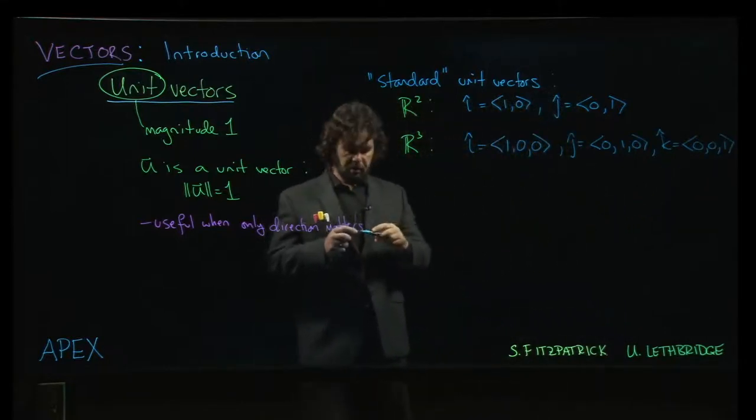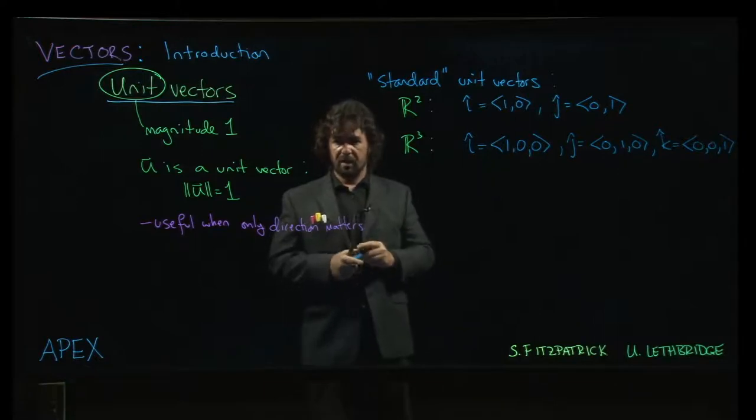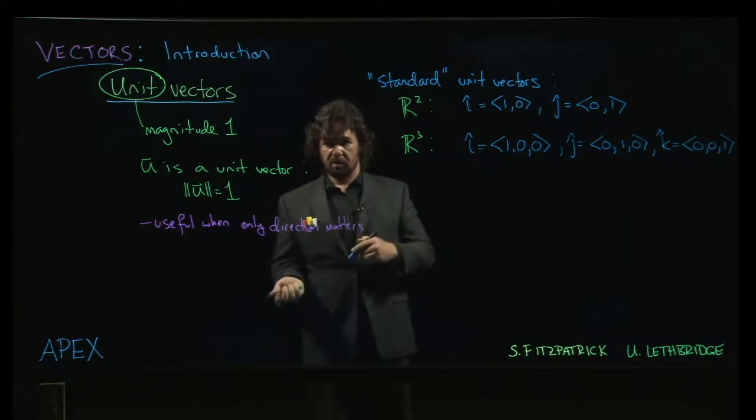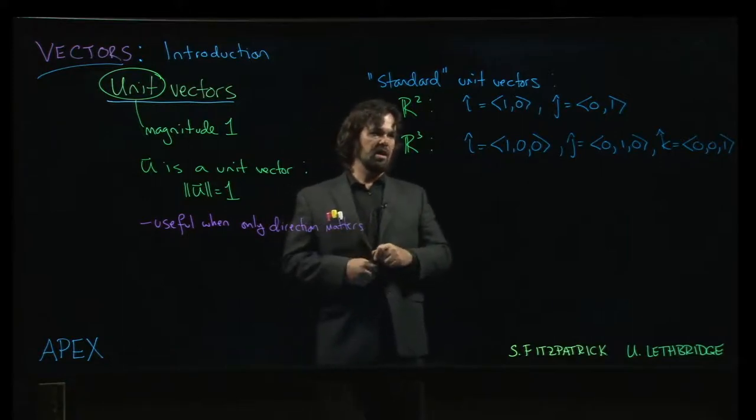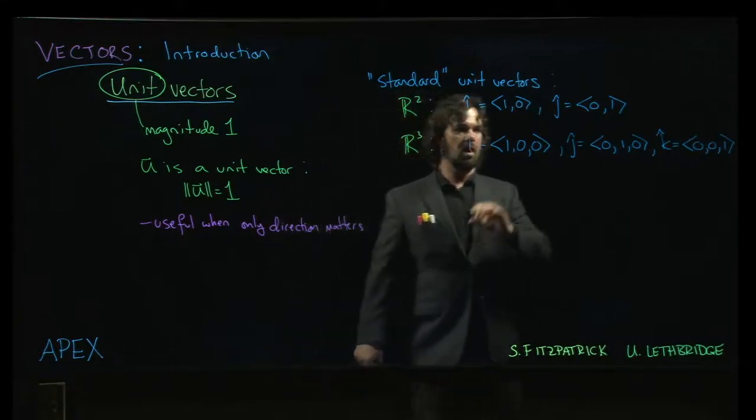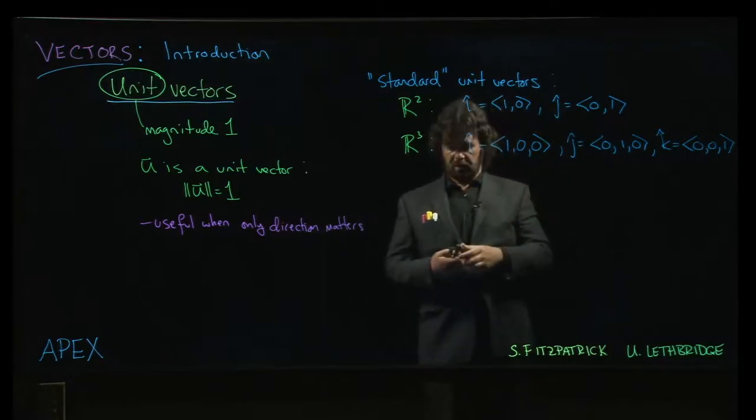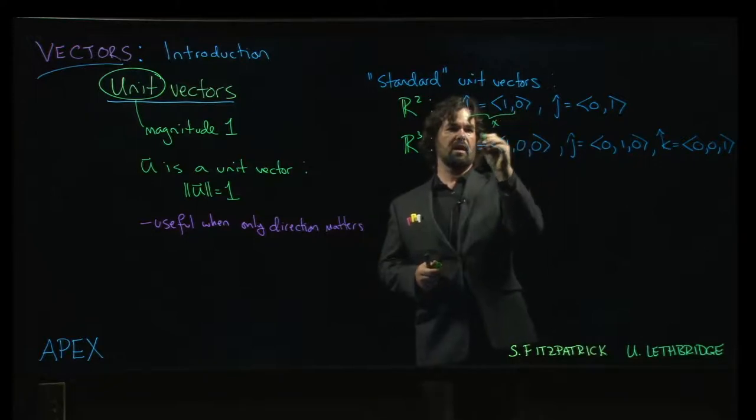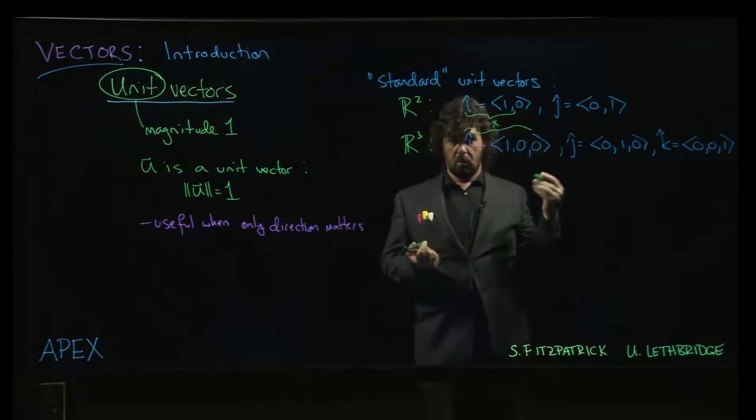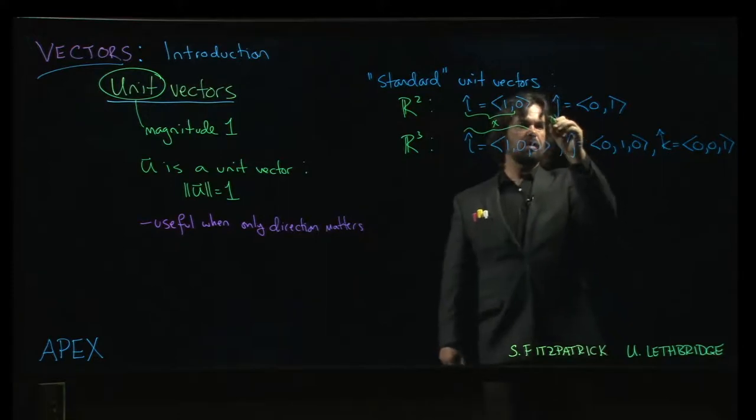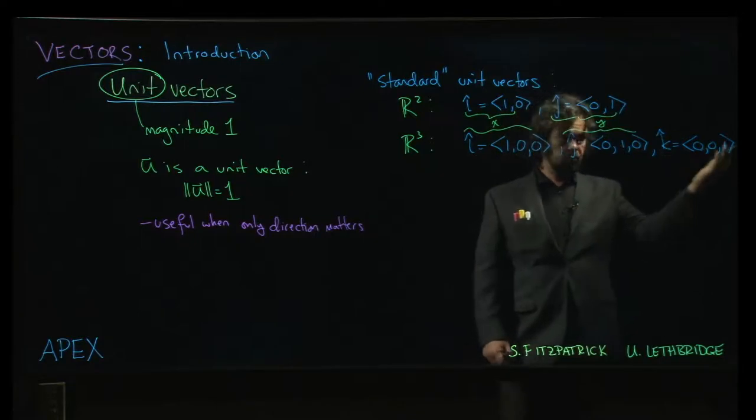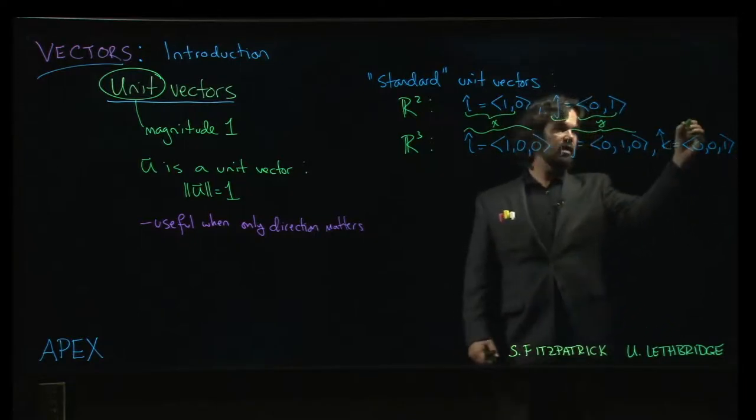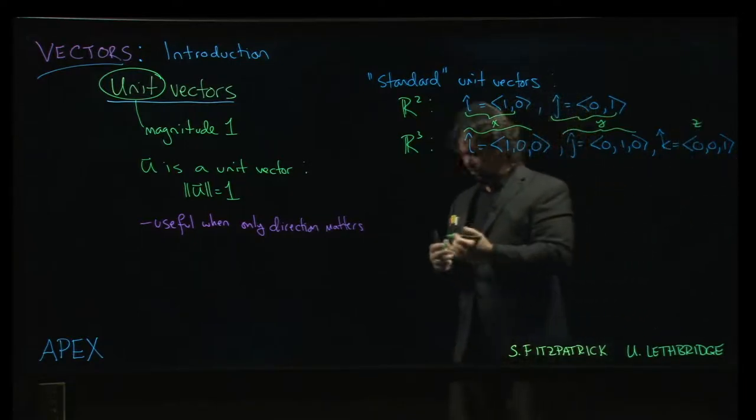Now, I think one reason why these are convenient, especially from a physics point of view, where you are sometimes jumping back and forth between two-dimensional and three-dimensional vectors, is you can use i and j. These refer to vectors which point along the x direction, whether you're in two or three dimensions. Same thing here—this vector points along the y-axis, so it represents the y direction. In three dimensions, we also have the z direction.